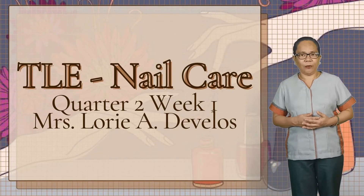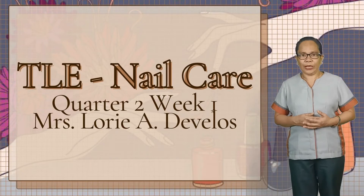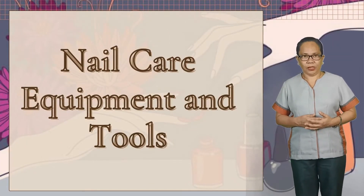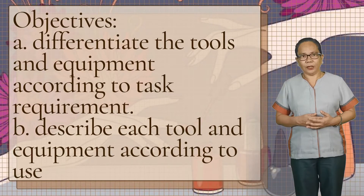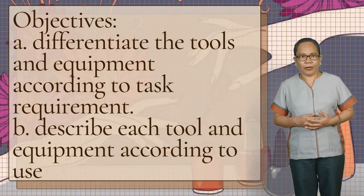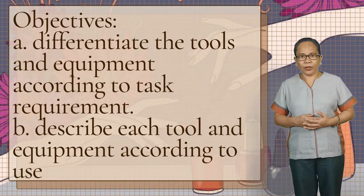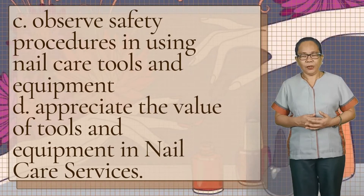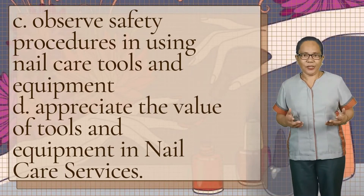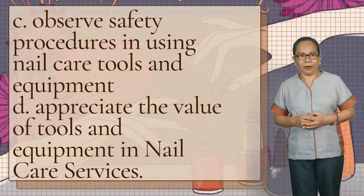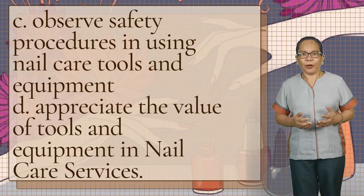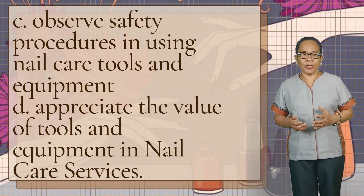This will be our lesson for quarter two, week one: nail care equipment and tools. For the objectives: letter A, differentiate the tools and equipment according to task requirement; letter B, describe each tool and equipment according to use; letter C, observe safety procedures in using nail care tools and equipment; and lastly, appreciate the value of those equipment in nail care services.